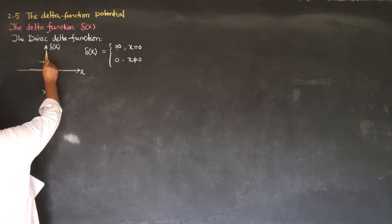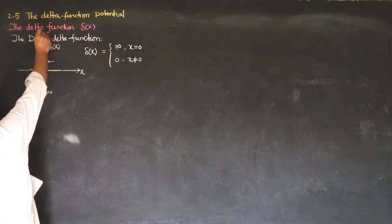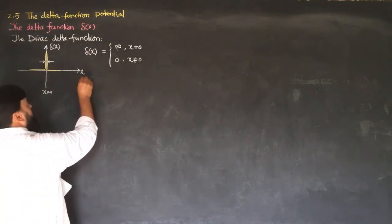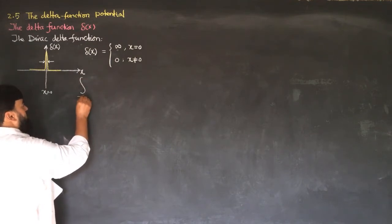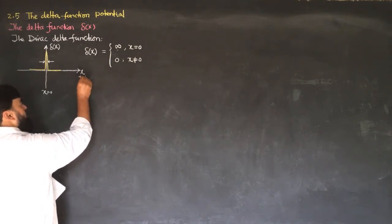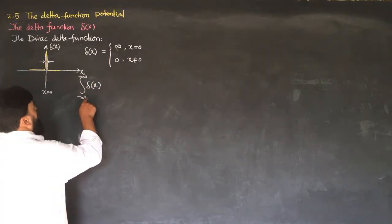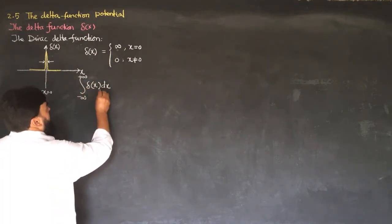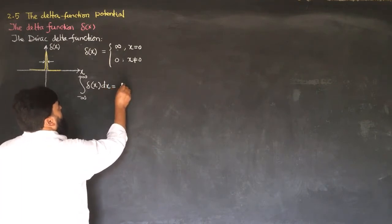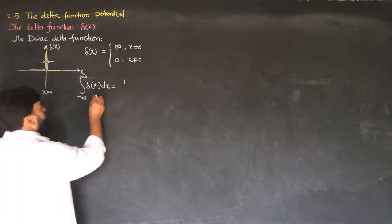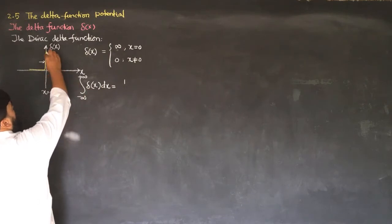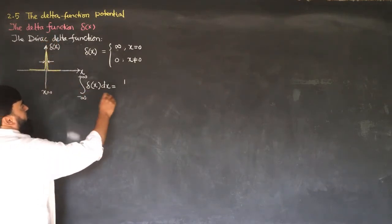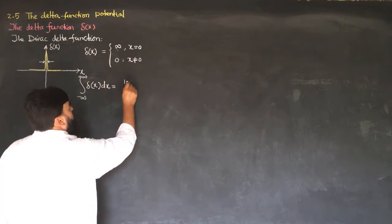It is a very narrow and very high peak such that if we integrate this function from minus infinity to plus infinity — the integral of δ(x) dx from minus infinity to plus infinity equals 1. This means the area under the curve equals 1.